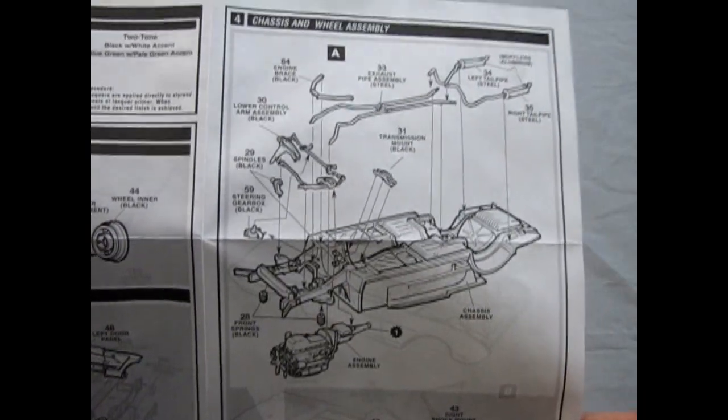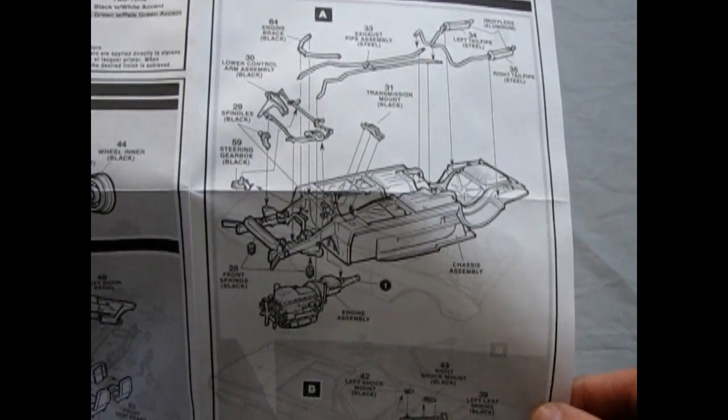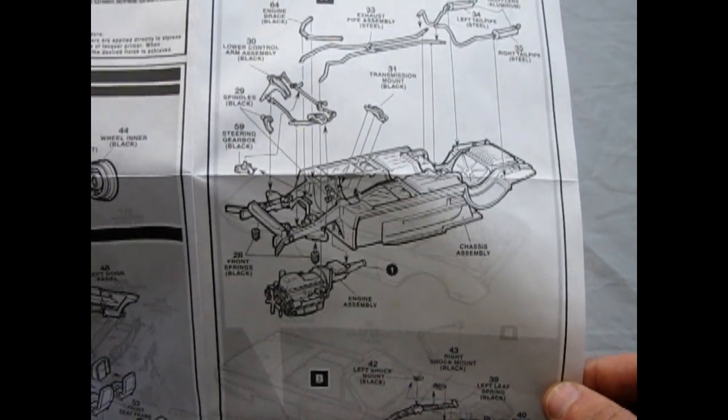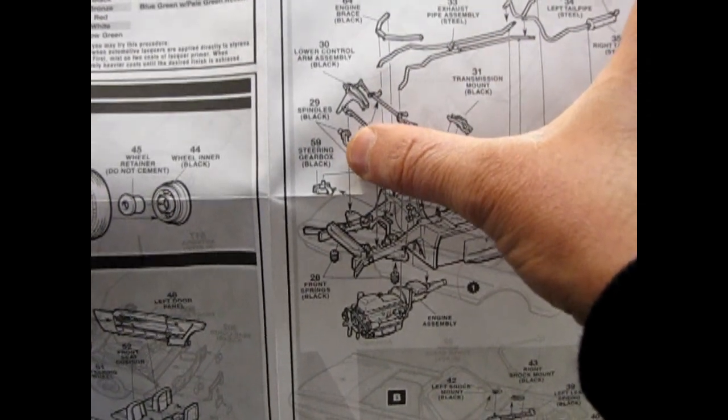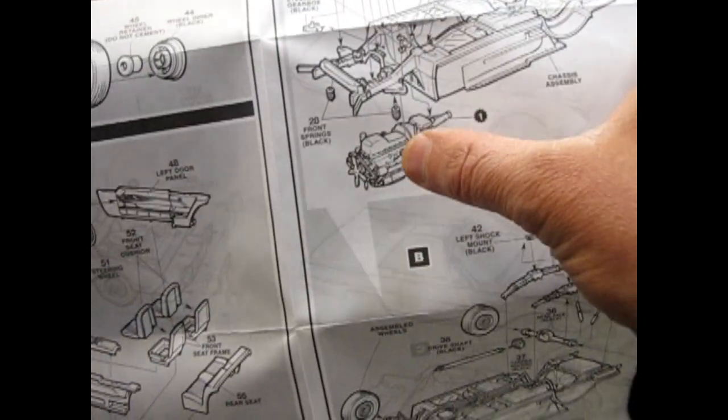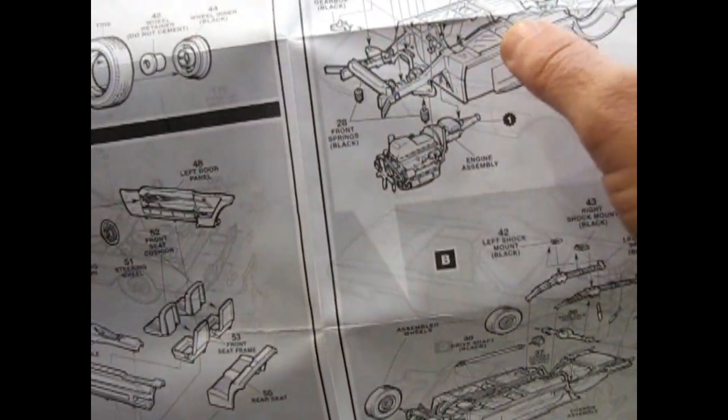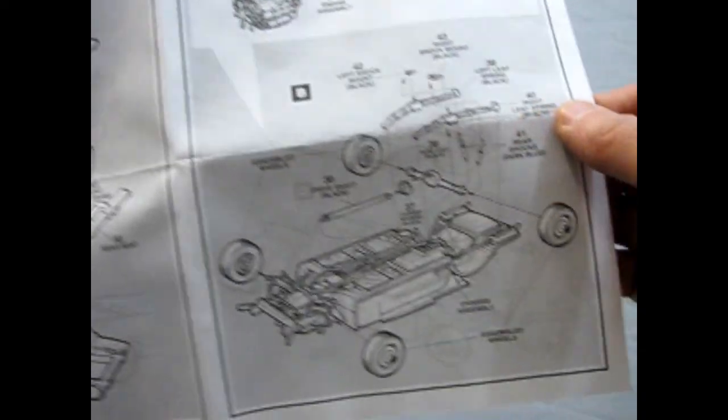And then as we flip the chassis over, you've got the exhaust pipes, the engine brace, the spindles, and the lower control arms. And you can take off those tie rods. And with a little bit of metal and mounting, you can actually make these wheels poseable. The steering box, the transmission mount, springs, and the engine drops in place.